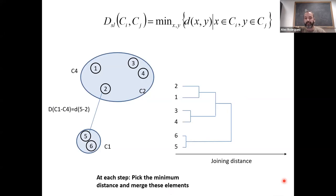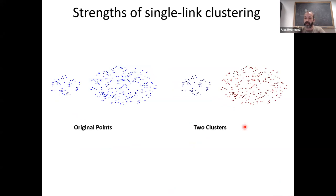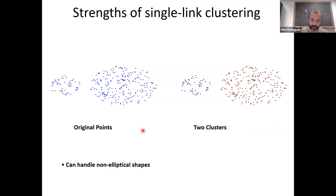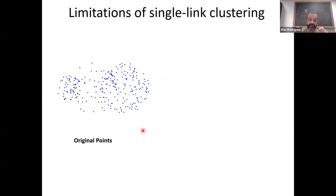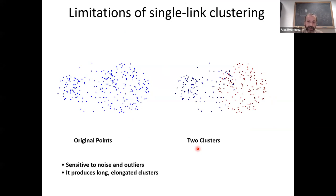Single linkage has advantages: it can handle non-elliptical shapes. Whatever shape your clusters have, single linkage will find them correctly. But if you have noise, that noise will break your cluster definitions, because by looking only at minimum distances you are very sensitive to noise. In the presence of noise, single linkage tends to elongate clusters so you don't see a clear structure.